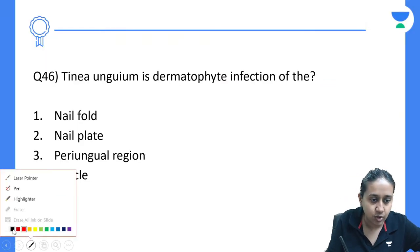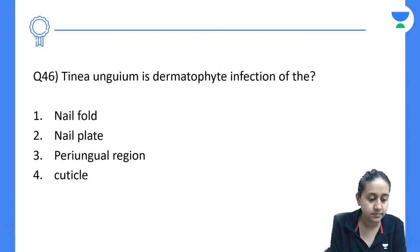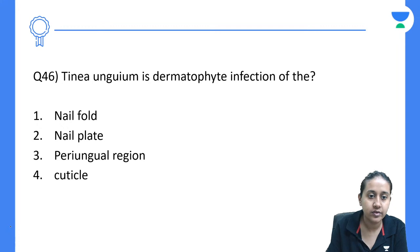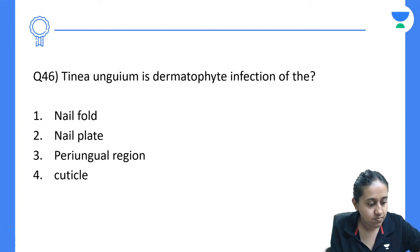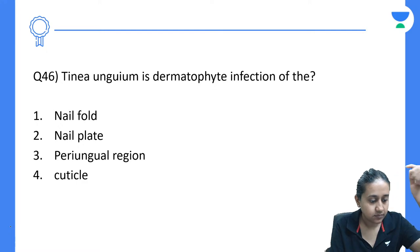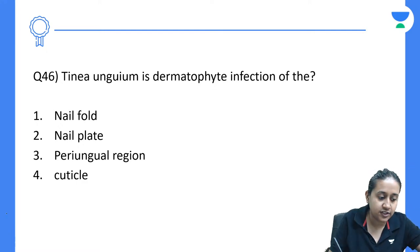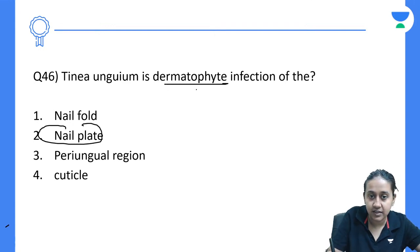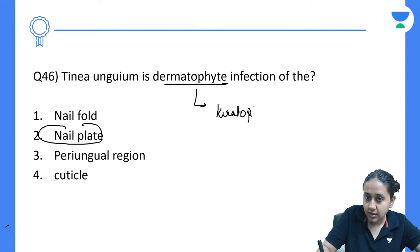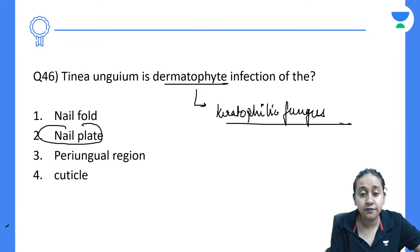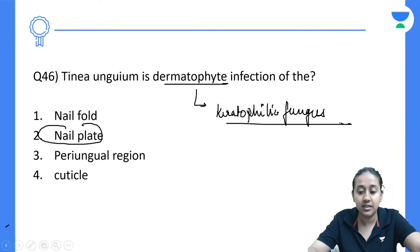Tinea unguium is the dermatophytic infection of the nail plate. Why? Because dermatophyte is a keratophilic fungus that feeds on keratin, so only keratin-rich areas — epidermis, hair, and nail plate — are affected.